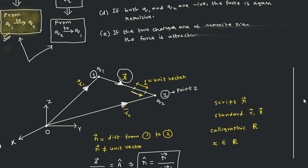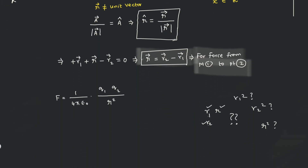So we write script r squared as the magnitude in the denominator. What about direction? That particular direction is the unit vector of script r, which I am now highlighting. That is the direction in which the force acts, and you attach that unit vector to the expression. With that on the right-hand side you have a vector quantity — this is the vector form of Coulomb's law.